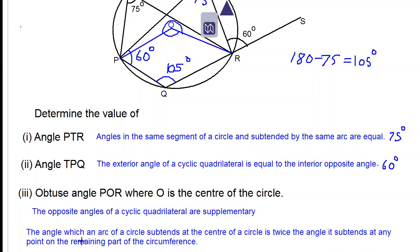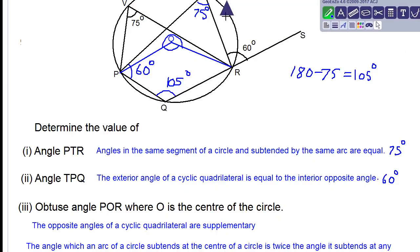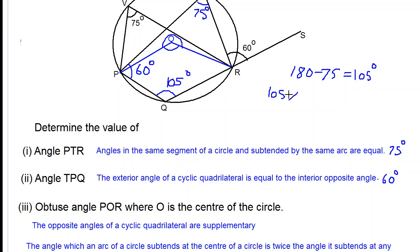The angle which an arc of a circle subtends at the center of a circle is twice the angle that subtends at any point on the remaining part of the circumference. So that long theorem just means that the angle on the outside is twice 105 degrees. So 105 times 2 will give you 210 degrees.